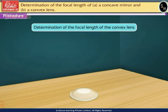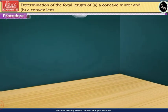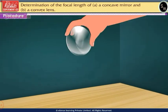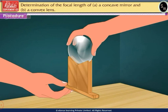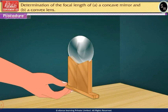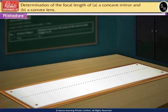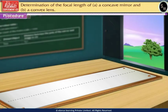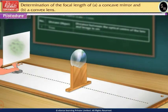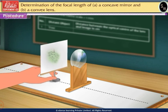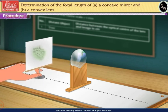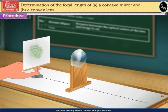Let us now determine the focal length of the convex lens. Take the convex lens and place it in the lens holder. Select a distant object such as a tree. Place the convex lens in front of the tree. Now place the screen behind the lens and move it towards or away from the lens until a clear image of the tree is obtained on the screen.